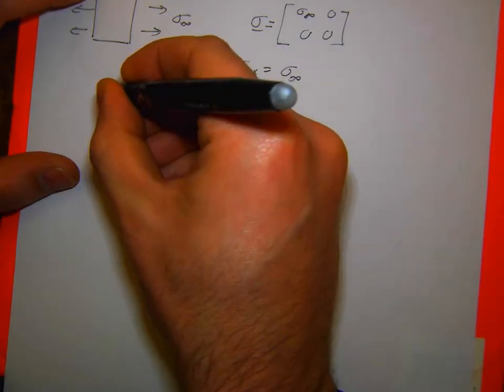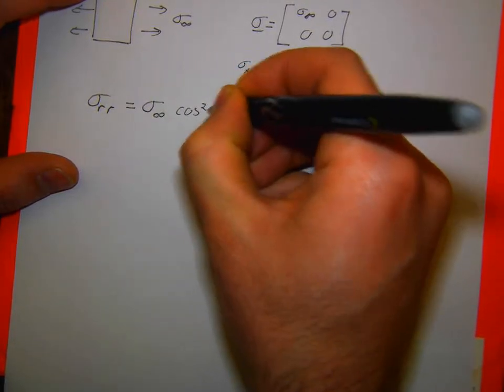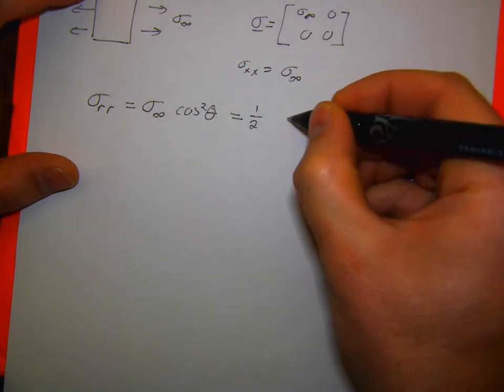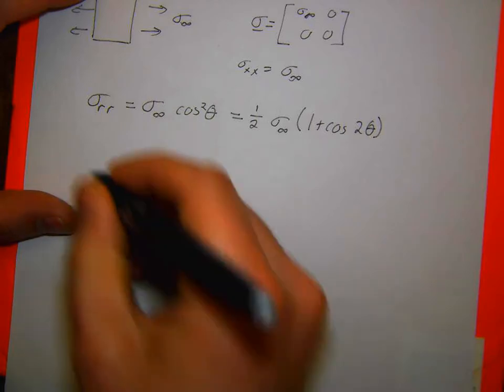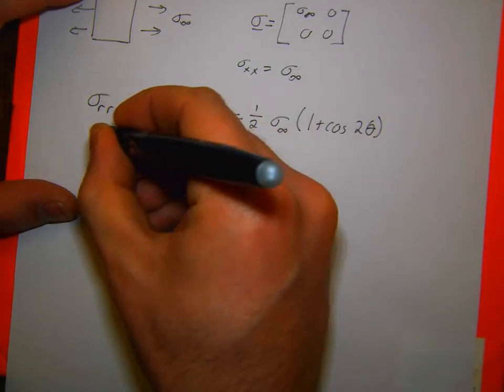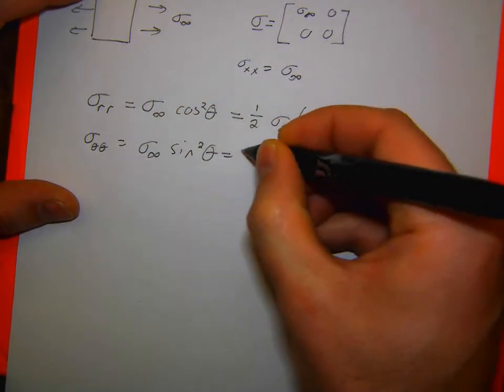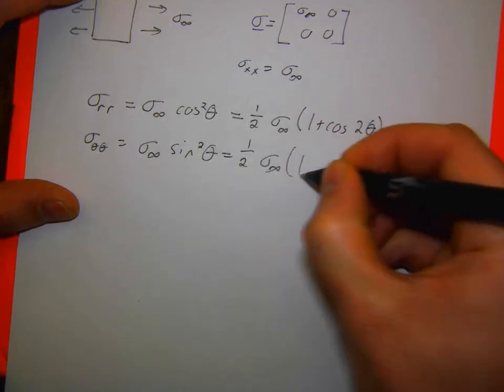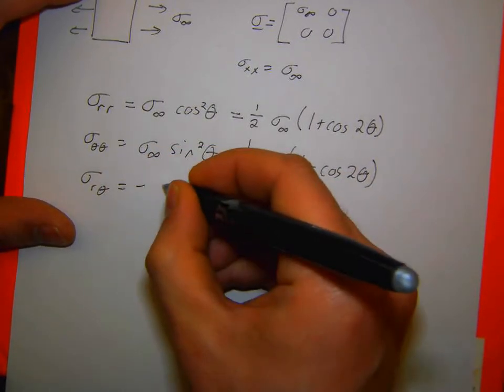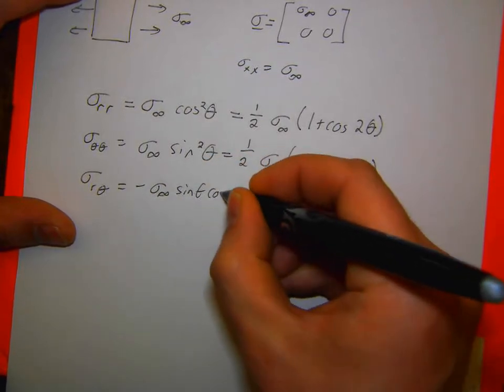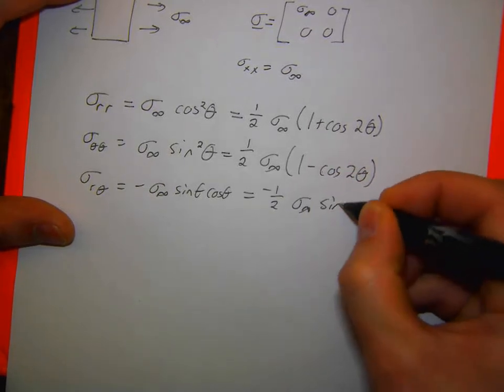In polar coordinates now if I were to plug that in, my sigma R is sigma infinity cosine squared of theta or I can use a cosine transform identity say that's one half times one plus cosine of two theta which turns out to be a slightly more useful way to look at it. Sigma theta theta is sigma infinity sine squared of theta or one half times one minus cosine of two theta. And then sigma R theta is negative sigma infinity sine theta cosine theta or minus one half sigma infinity sine of two theta.